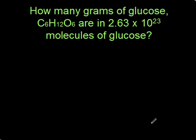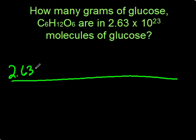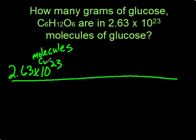So we'll set up our dimensional analysis. As usual, things we know go on the top left, and we know we have 2.63 times 10 to the 23rd molecules of glucose, and I'm running out of room so I'm going to write it up here, molecules of C6H12O6.